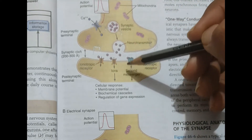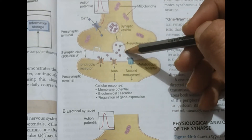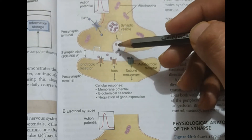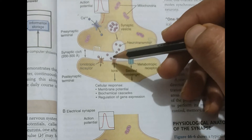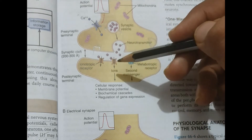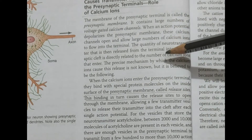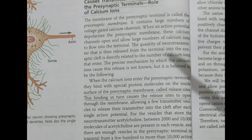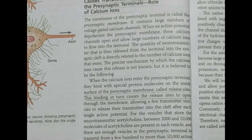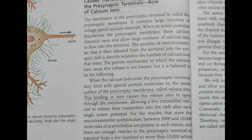The protein on the vesicle and the release site protein fuse together, causing the formation of opened vesicles, which release the neurotransmitters. This whole mechanism of calcium ions contributing to the process of neurotransmitter release is a hypothesis, and it is very important as it is the basis of how neurotransmitters are released, which in turn serves many important functions.